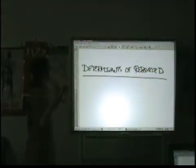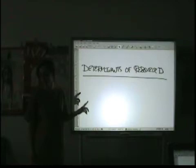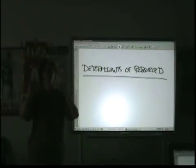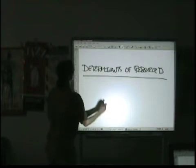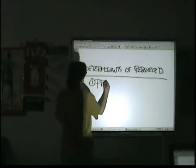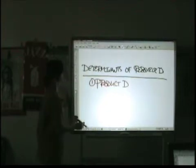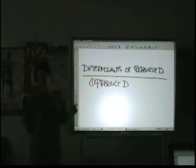We already said that one of the main things that's going to affect demand for a resource is demand for the product. So that's the first one — very important. Number one: product demand. If the product demand increases, resource demand increases. And the reverse is also true.